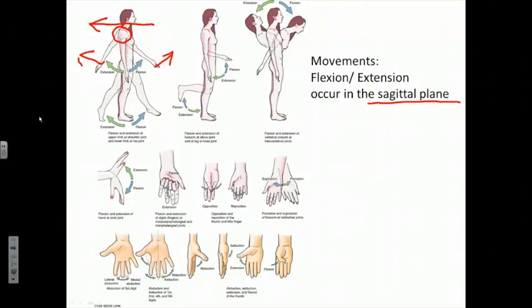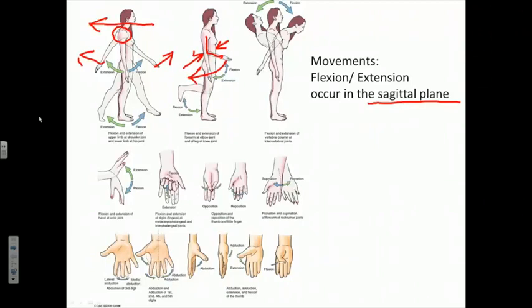Another way of defining flexion is reducing the angle between two adjacent body parts — bringing the two anterior body parts closer together and thereby decreasing the angle between them. What's illustrated in the middle picture is flexion of the forearm at the elbow: flexion decreases the angle between the arm and forearm, whereas extension increases the angle when we move the forearm back to the anatomic position in the posterior direction. Two of the actions possible at the elbow joint and at the shoulder joint are flexion and extension.